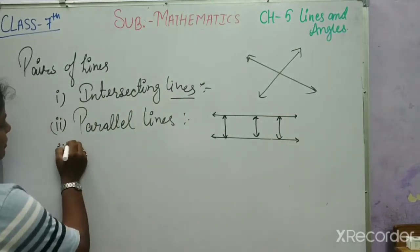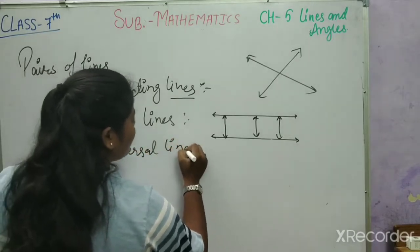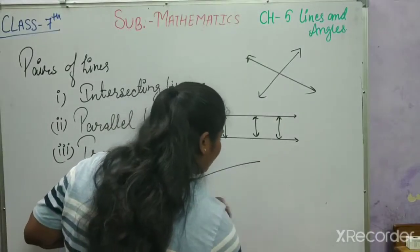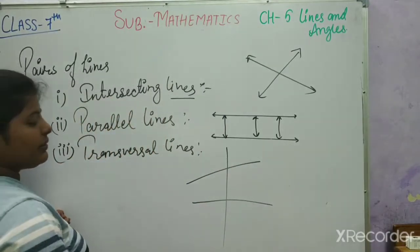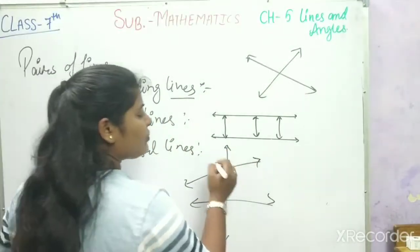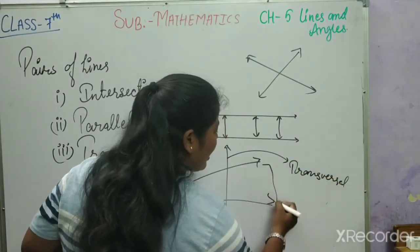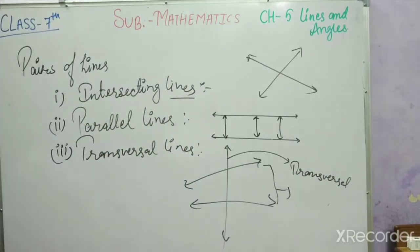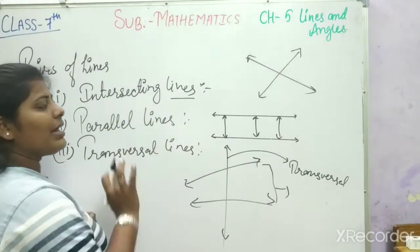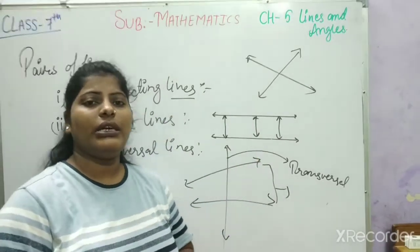The third type is transversal lines. A transversal line and a parallel line are both different things. There are two lines, and one common line intersects both of them — that is the transversal line. These two lines can be intersecting or parallel lines.